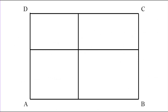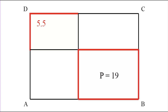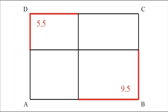We know that the perimeter of a rectangle is twice the sum of its length and width. Looking at the smallest of the four rectangles, its perimeter is 11, and we notice that the top and left sides lie on the perimeter of rectangle ABCD, so the sum of its length and width is half of 11. Similarly, the largest rectangle has perimeter 19, so the sum of its bottom and right sides is half of 19, or 9.5, which also contributes to the perimeter of ABCD.